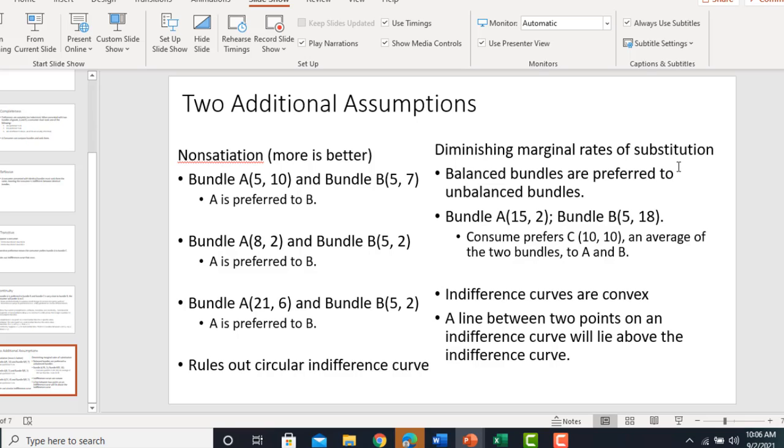Diminishing marginal rates of substitution states that balanced bundles are preferred to unbalanced bundles. So, for example, bundle A has 15 units of one good and two of the other. Bundle B has five units of one good and 18 of the other. So, diminishing marginal rates of substitution will state that the consumer would prefer bundle C that has an average of those two bundles. An average of the two bundles will be preferred to either of the extremes.